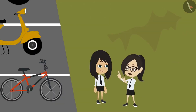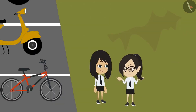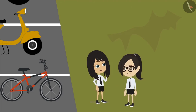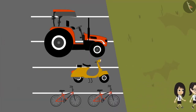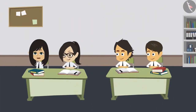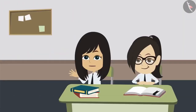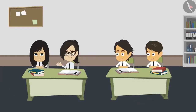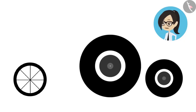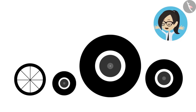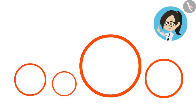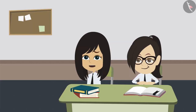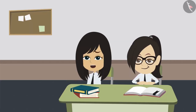The students wonder how they can tell how big or small the circles are compared to each other. They decide to ask their teacher. In class, they ask: Sir, we saw tractor, bicycle, and scooter tires in the school parking lot. All tires are circle-shaped and there is a difference in their size, but to find out the difference, we should know how to measure those tires.